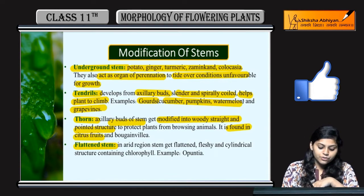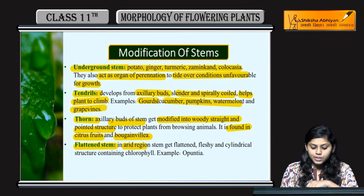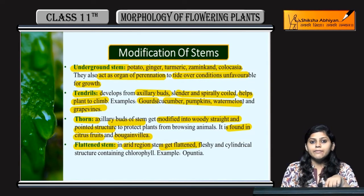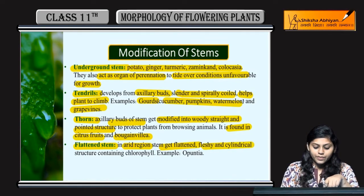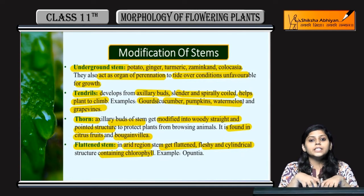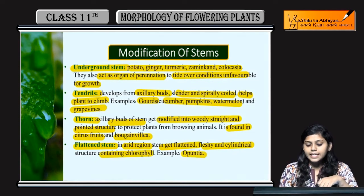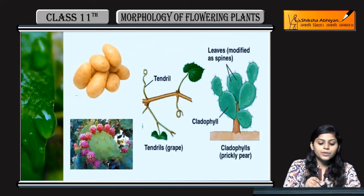Thorns milti hain citrus fruits aur bougainvillea mein. Flattened stems kya hoti hain - arid region mein milti hain, flattened hoti hain isliye yeh flattened stems hain. Fleshy and cylindrical hoti hain and chlorophyll contain kerti hain taaki yeh flattened hone ke bawajood bhi yeh photosynthesis kar saken.